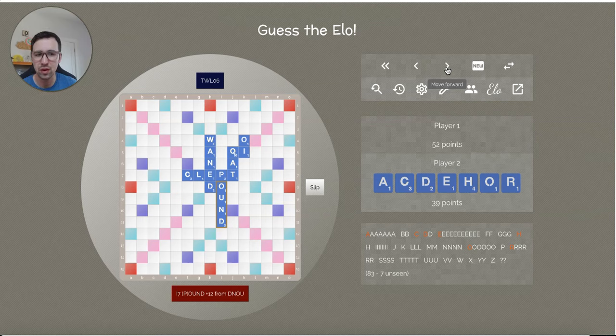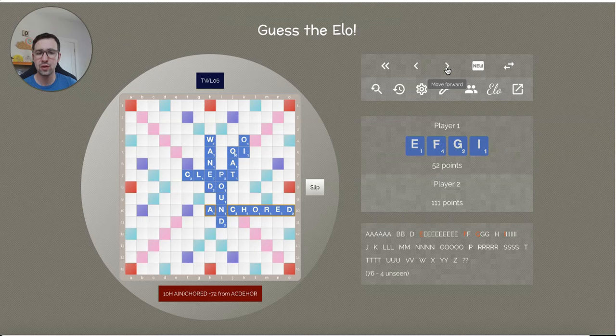And Player 2 has some bingos here. Roach, is that going to play though? Anchored through the end will play. I don't know if they have anything else. And they find it. Nice job. Player 2 gets a bingo down.